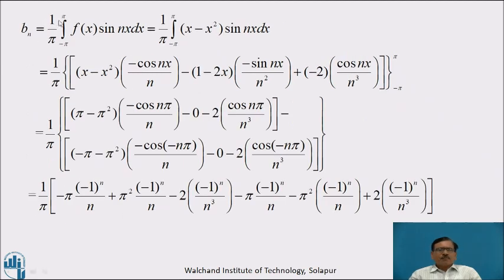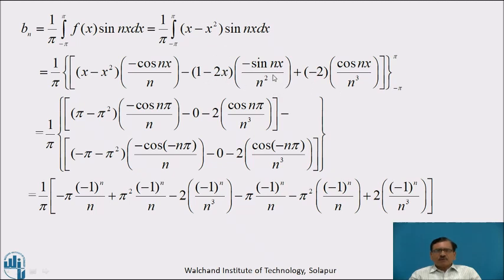Now we calculate bₙ. bₙ equals 1 by π integration from minus pi to pi of f(x) sin(nx) dx, which equals 1 by π integration from minus pi to pi of x minus x square into sin(nx) dx. Again using the generalized rule of integration by parts: keep x minus x square as it is, integration of sin(nx) is minus cos(nx) by n, minus derivative of x minus x square which is 1 minus 2x, and integration of minus cos(nx) by n is minus sin(nx) by n square, plus derivative of 1 minus 2x which is minus 2, into integration of minus sin(nx) by n square which is plus cos(nx) by n cube, with limit minus pi to pi. Putting x equal to pi: we get pi minus pi square into minus cos(nπ) by n, and sin(nπ) is 0 so second term is 0, minus 2 cos(nπ) by n cube.